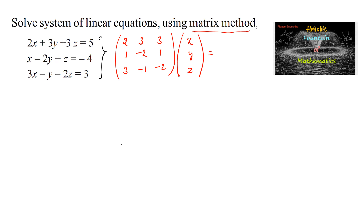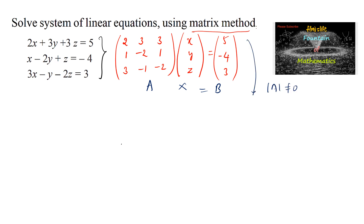The constant matrix B is 5, -4, and 3. This gives the system in the form AX = B. Using the matrix method, when the determinant of A is not equal to 0, the system has a unique solution given by X = A⁻¹ × B.